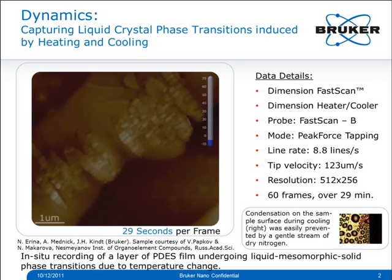This data was taken with the Dimension FastScan using the Dimension Heater Cooler, FastScan B probes, and was recorded in Peak Force Tapping mode at a line rate of 8.8 lines per second and a tip velocity of 123 microns per second at a pixel resolution of 512 by 256 pixels.